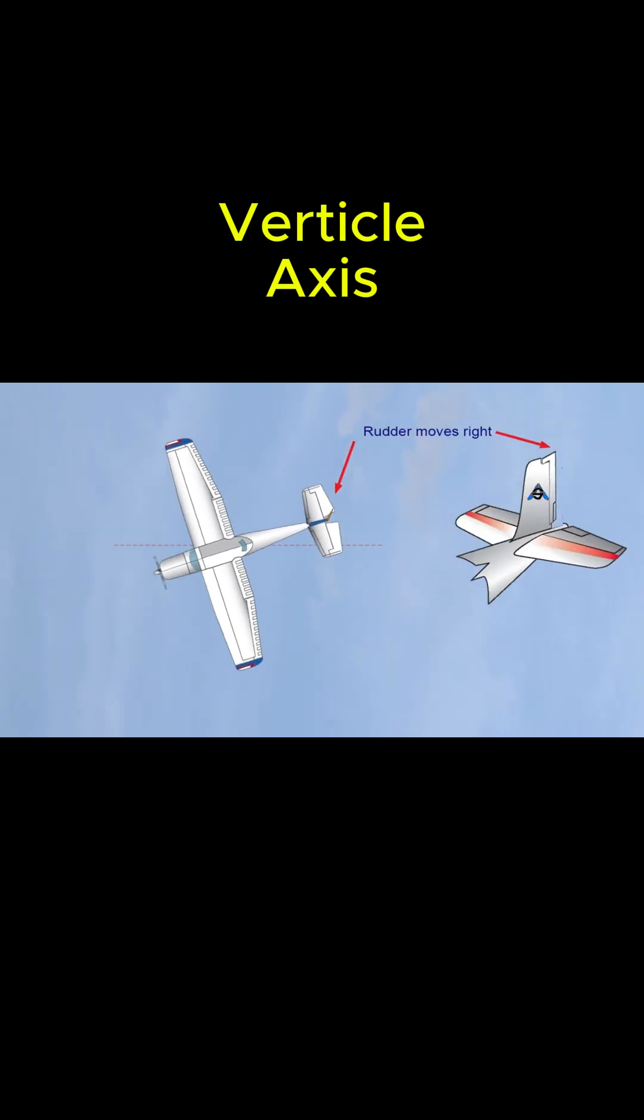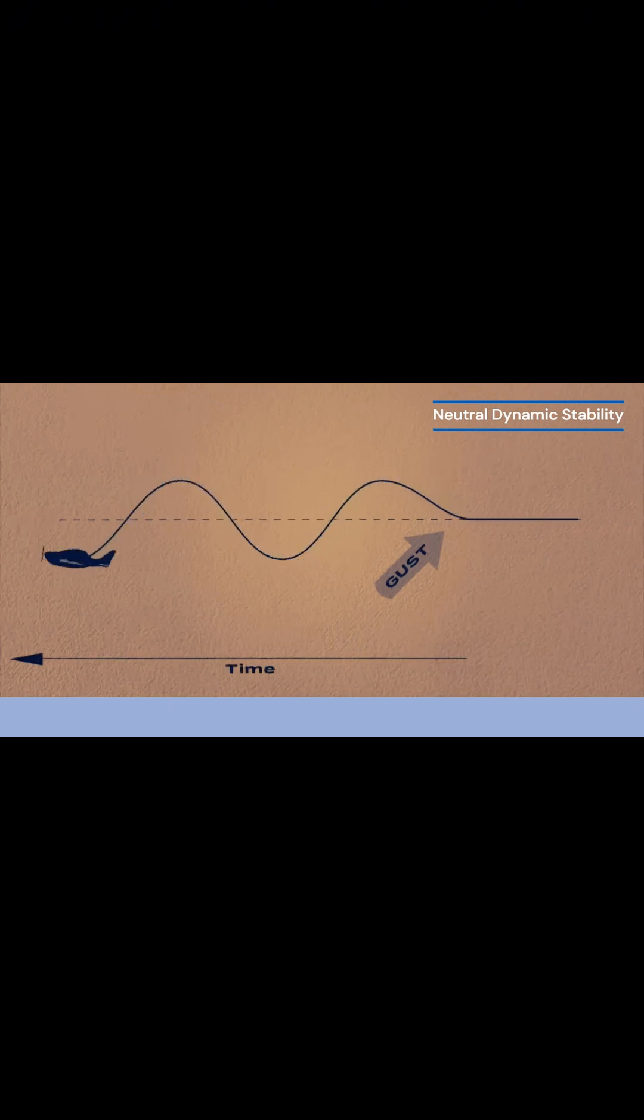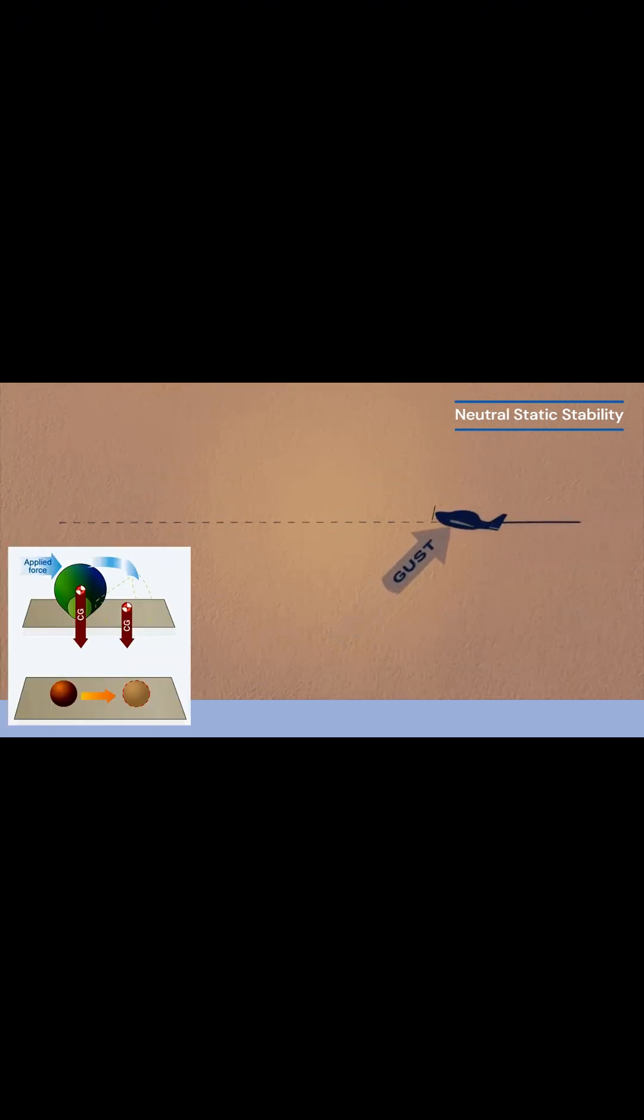Managed by the rudder. Neutral stability means if an airplane is disturbed it stays in its new position without returning or diverging further.